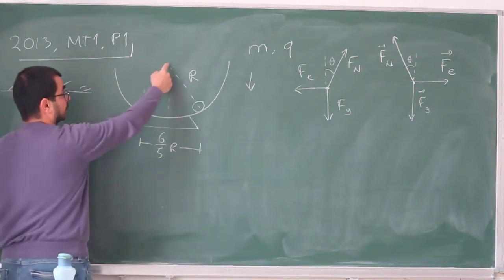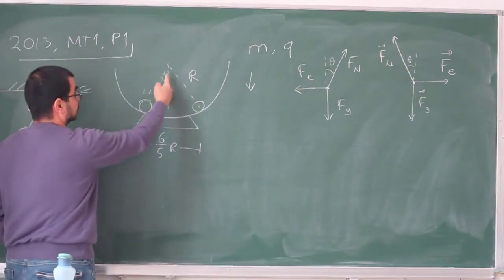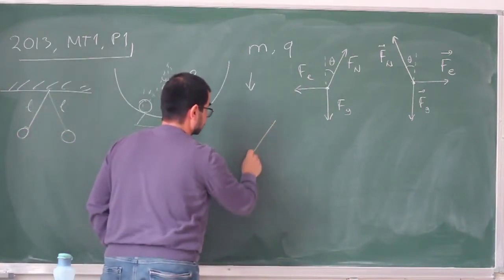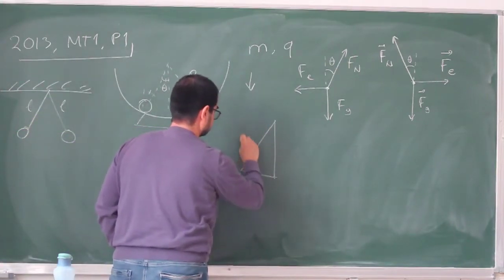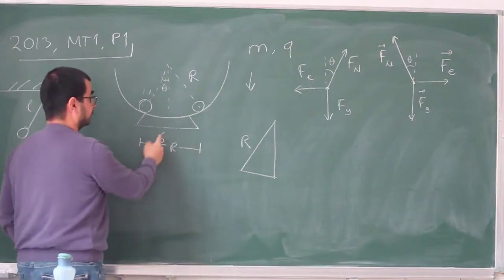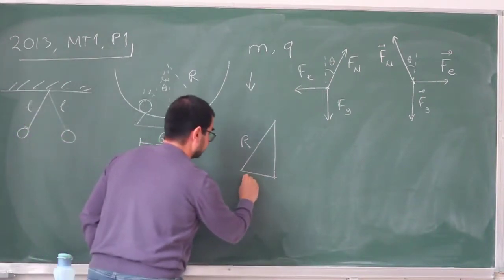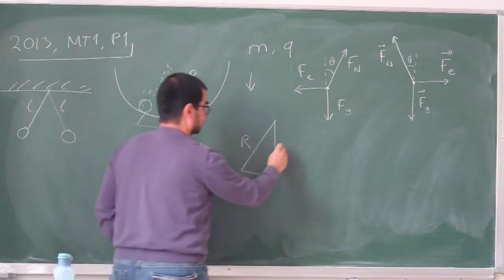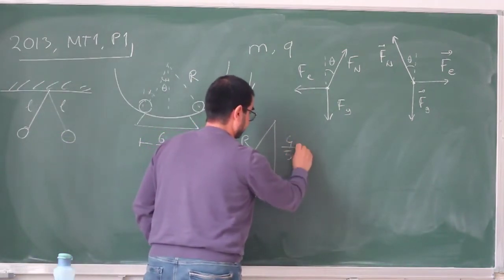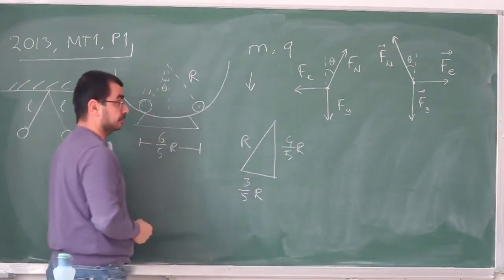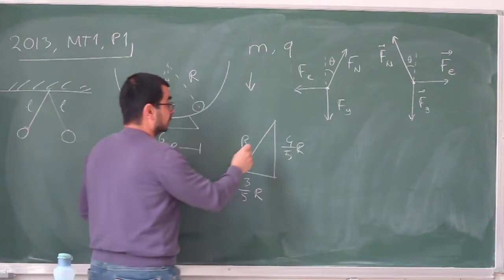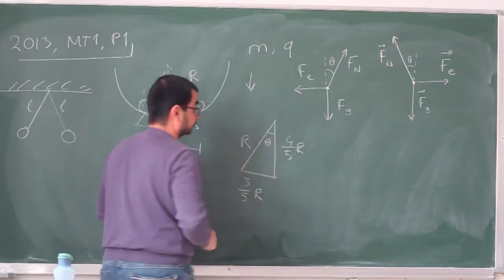Now what can we say about this angle theta? Well, if you look at this triangle, so this side is R, this side, let's draw this triangle here. This is R, this is half of that, this side of that triangle is half of that, so it's three-fifths R. Now since this is a right triangle, this must be four-fifths R. This is just a three-four-five triangle, five-fifths being just one.